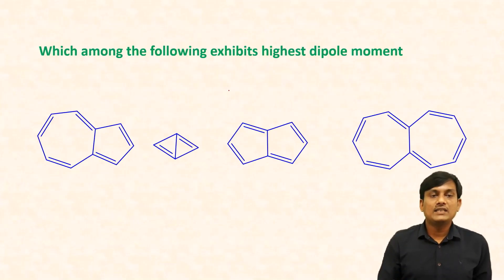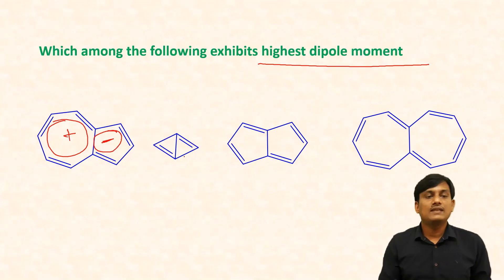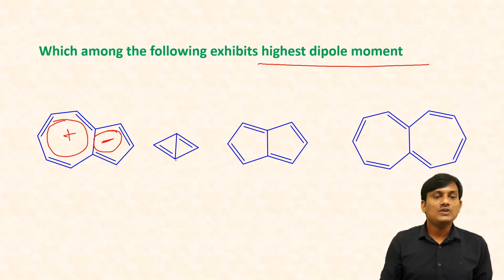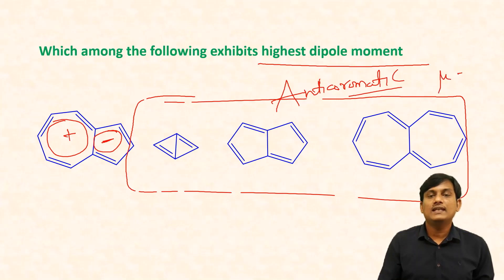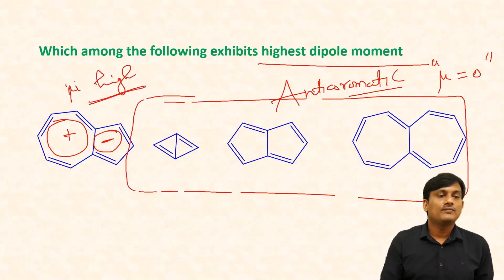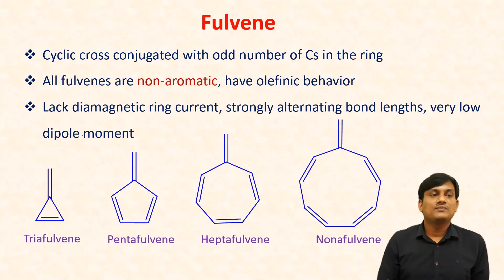Which among the following exhibits the highest dipole moment? In azulene, you have positive charge and negative charge separation, so azulene has a very high dipole moment. In the other structures there is no separation of charges — they are neutral, and those are anti-aromatic, so the dipole moment is nearly zero. Aromatic compounds have the highest dipole moment due to separation of charges. In azulene, it is a very high dipole moment.